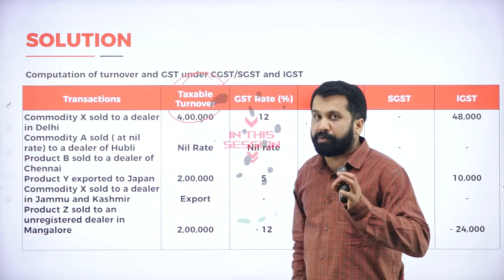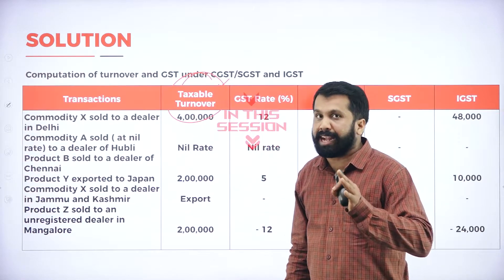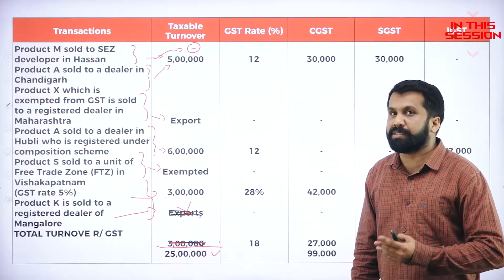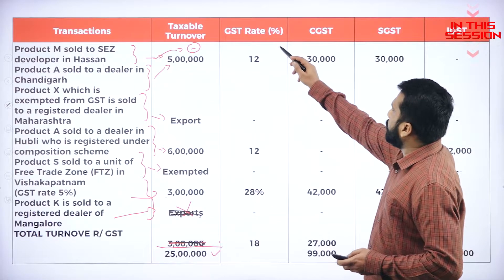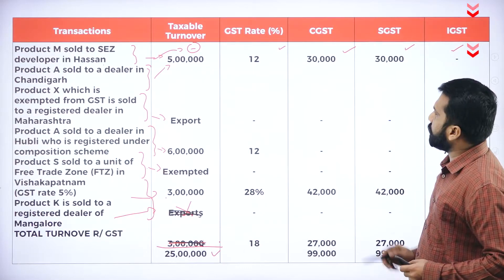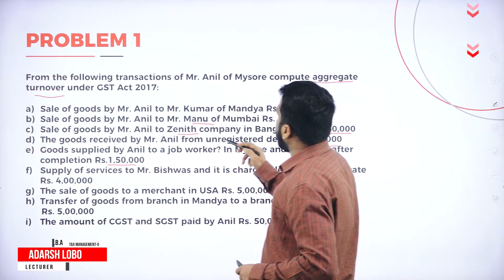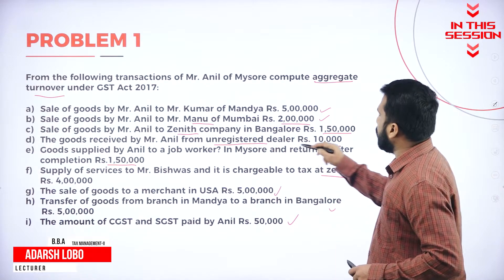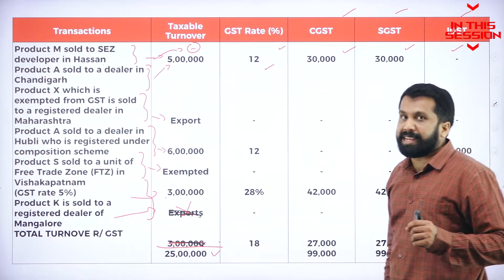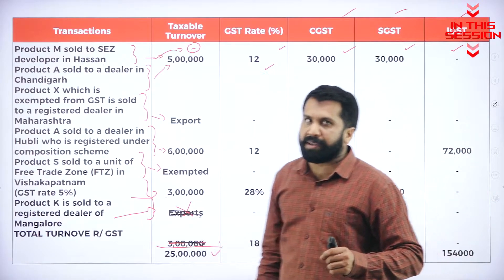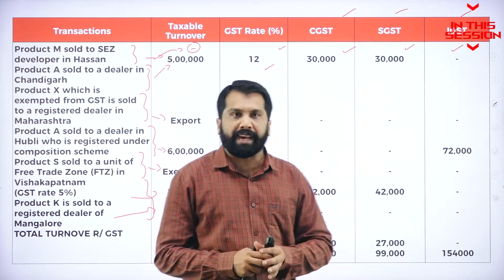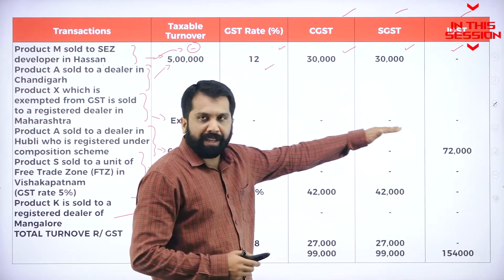Remember this word: taxable. Taxable means all the exempted items will be removed from the percentage. The goods received by Mr. Anil from an unregistered dealer is 10,000. We are dealing with transactions happening within Karnataka — like Hubli, Bangalore, Dharwad — where you have to calculate CGST and IGST.